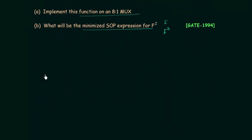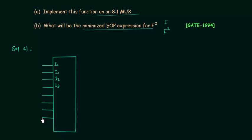Let's solve part (a). I will quickly draw an 8:1 MUX. We know that 8:1 MUX has 8 inputs and 3 selector variables, also called select lines. The inputs are i0, i1, i2, i3, i4, i5, i6, and i7.